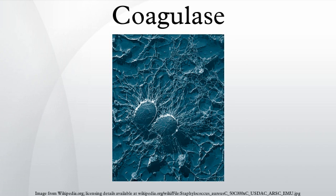List of coagulase positive Staphylococcus: Staphylococcus aureus subsp. anaerobius, S. aureus, S. delphini, S. hyicus, S. intermedius, S. lutrae, and Staphylococcus schleiferi subsp. coagulans.